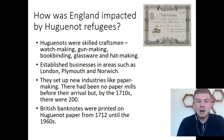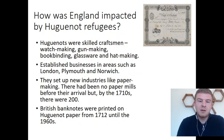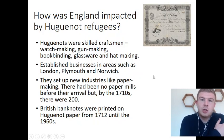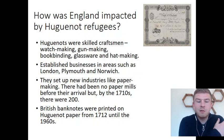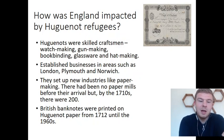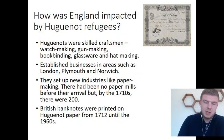But by the 1710s, about 100 years after the Huguenots first arrived in Britain, there were 200 paper mills. One of the lasting things the Huguenots brought to Britain was that British banknotes were printed on Huguenot paper — from a Huguenot paper mill — from 1712 all the way through until the 1960s. That's a huge amount of time where this really important part of British life, paper money, was done with something the Huguenots had brought to Britain.